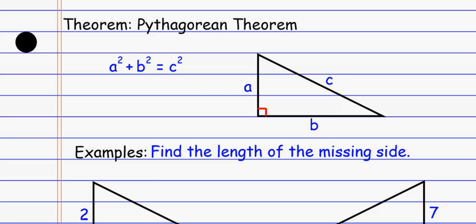So, the Pythagorean Theorem is used for right triangles and right triangles only, and what it allows us to do is relate the different sides of a right triangle.